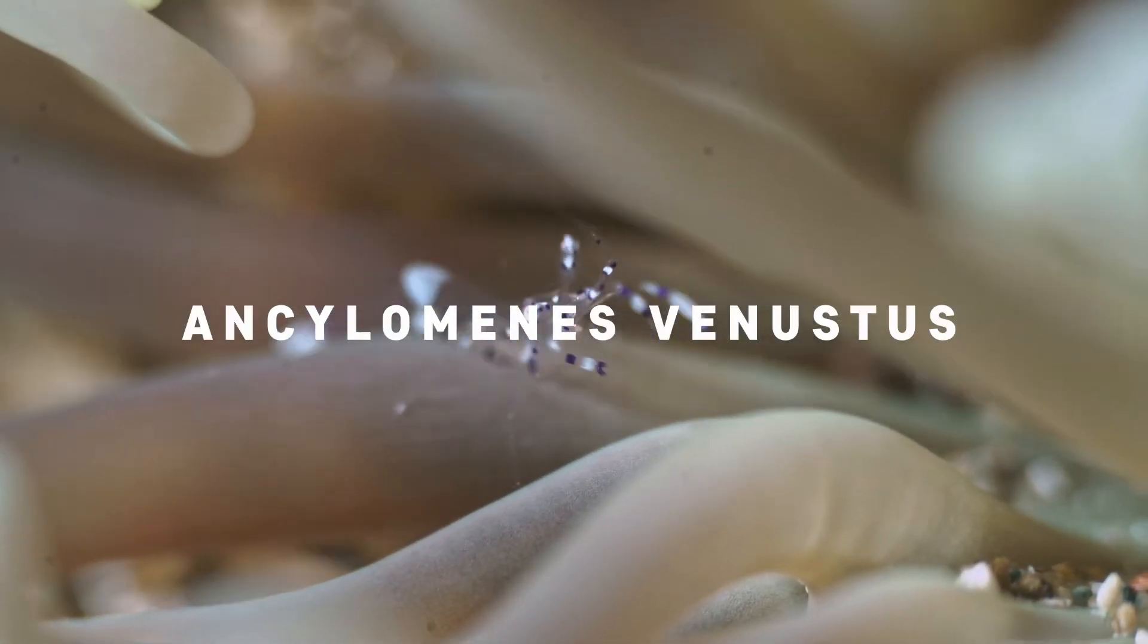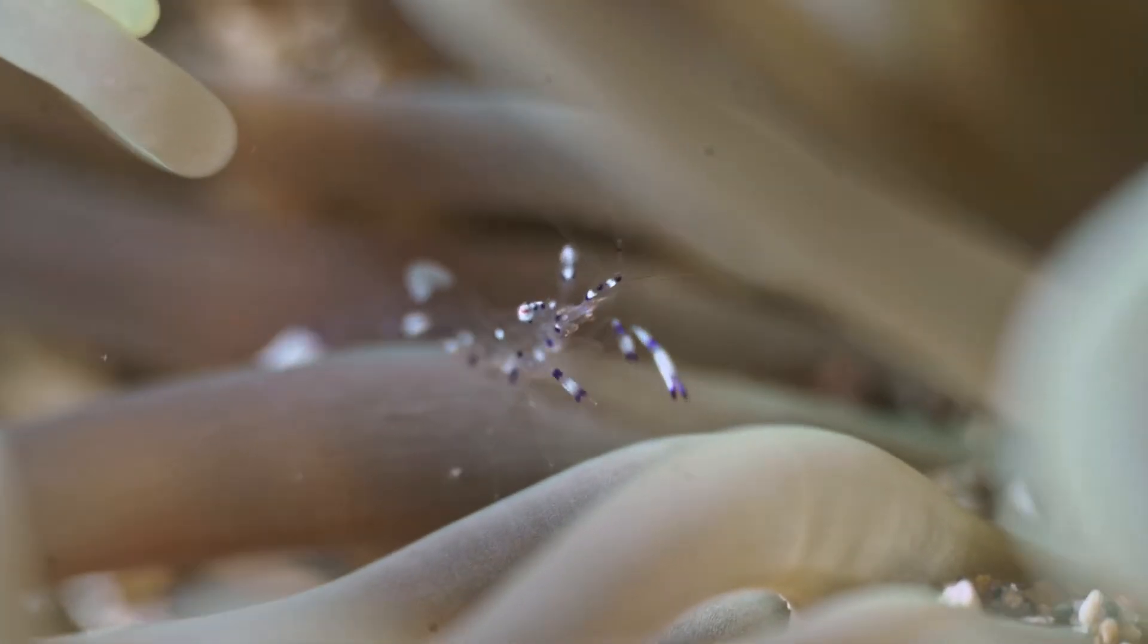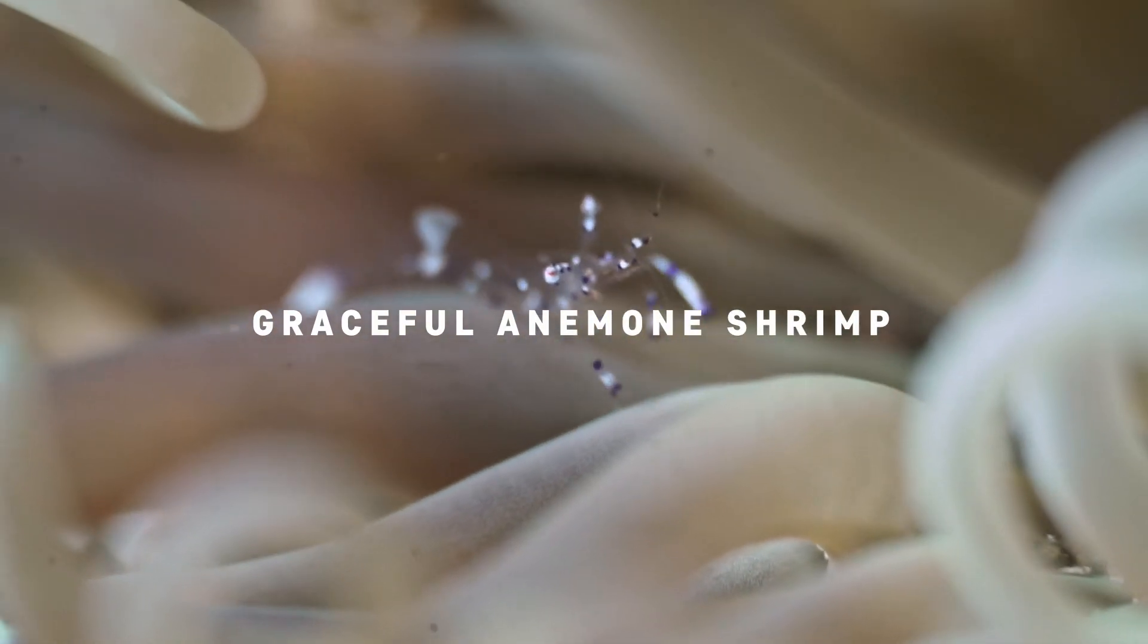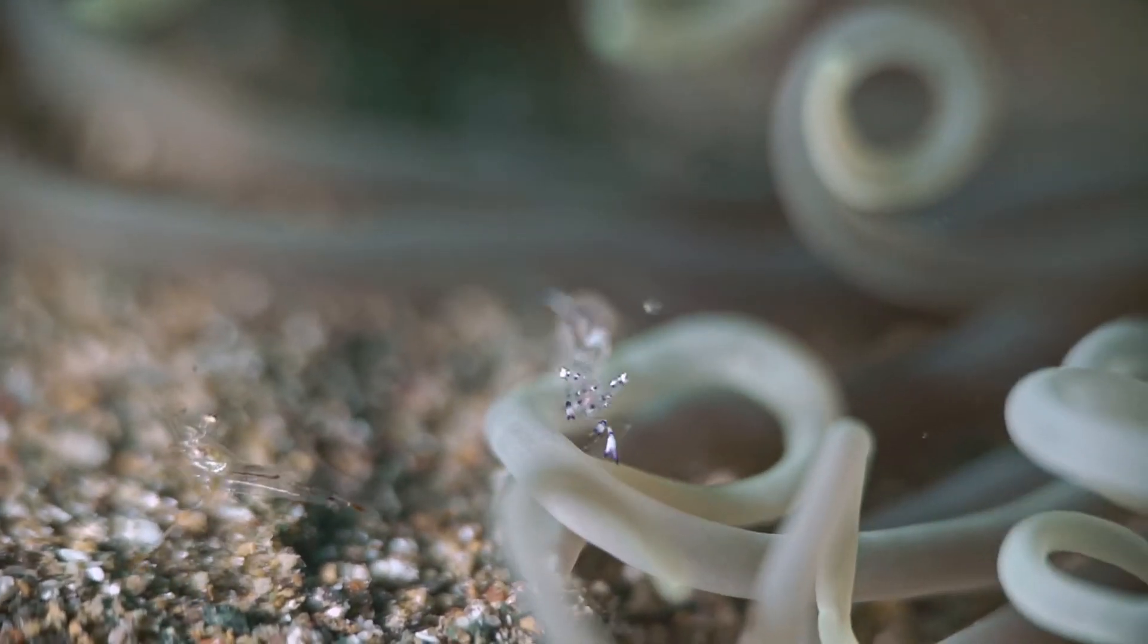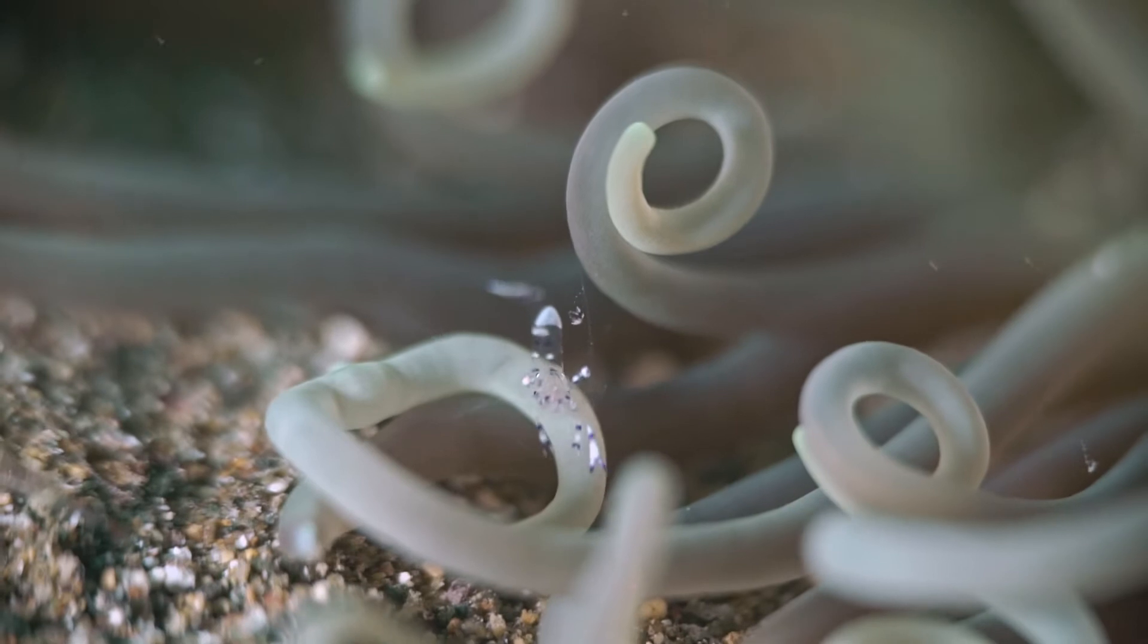This is Ancylomenes venustus. It is also called graceful anemone shrimp. However, most divers recognize this guy as commensal shrimp. For the purposes of common familiarity, we'll call it commensal shrimp.